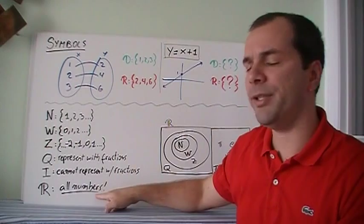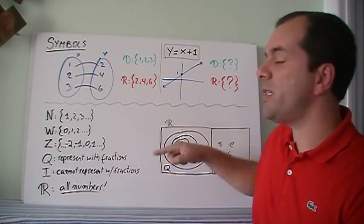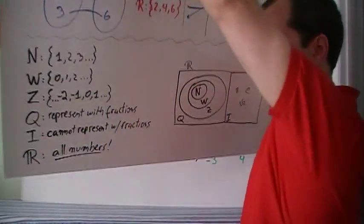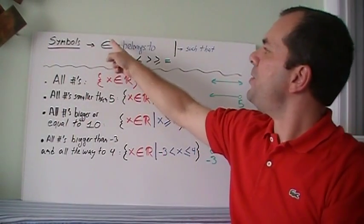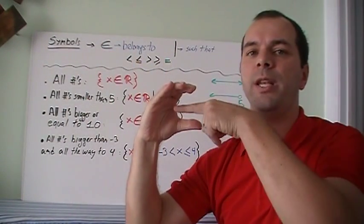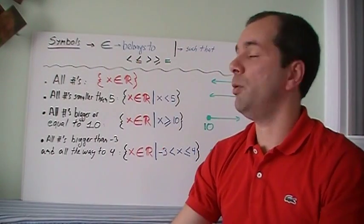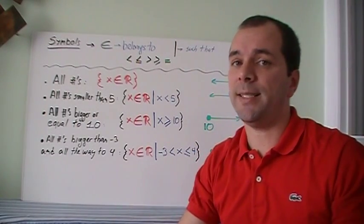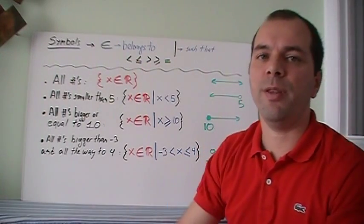And then when you put them all together, all numbers are called the real numbers. And real numbers are the ones that we are mostly interested in. So what about those symbols? Well, there's this symbol, it looks like a c with a line in between. It's not an e, it's a c with a number in between, and it represents belongs to. Then there's this vertical line, which is such that.